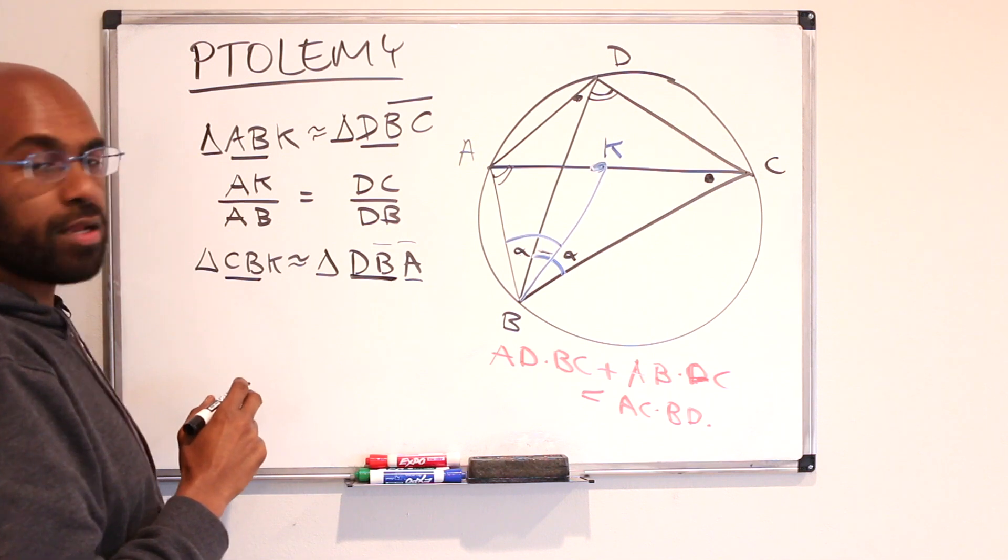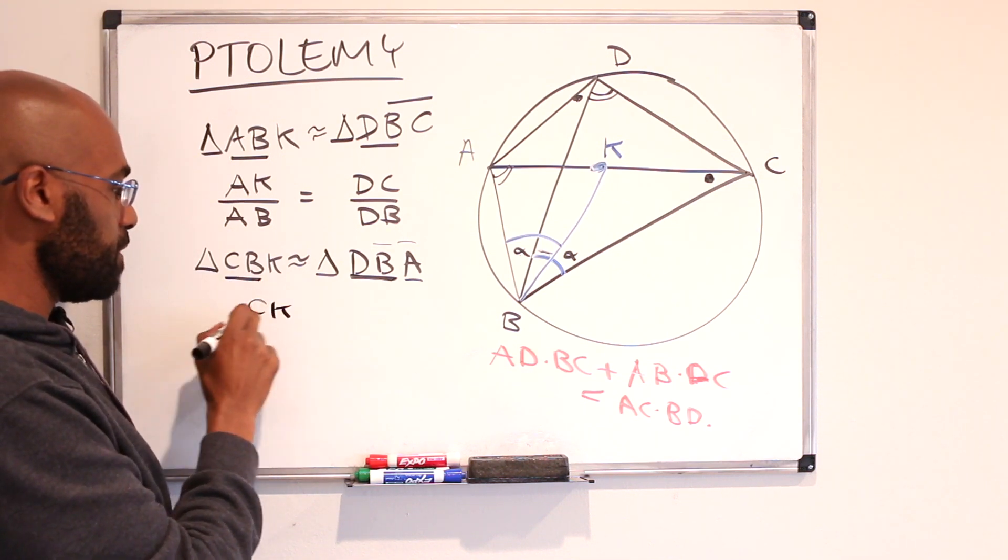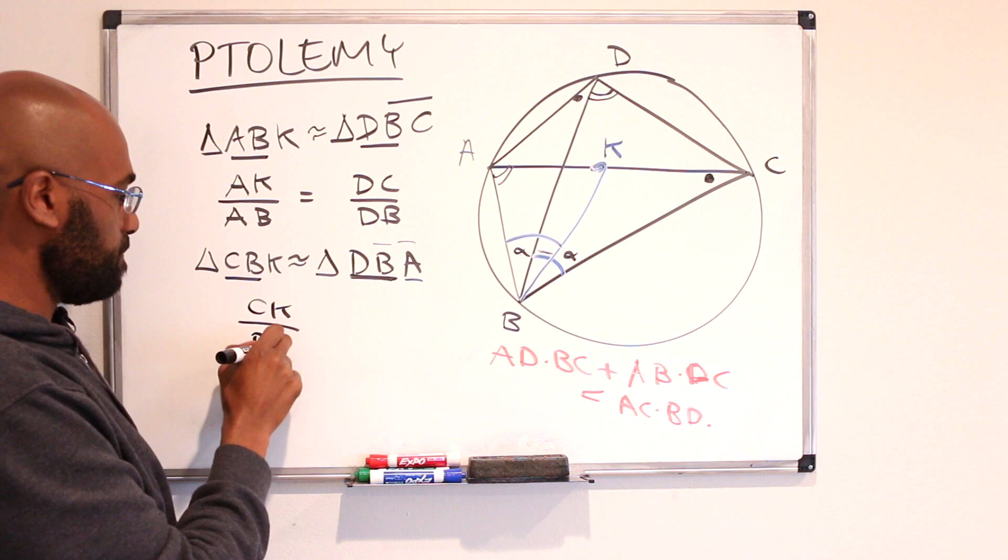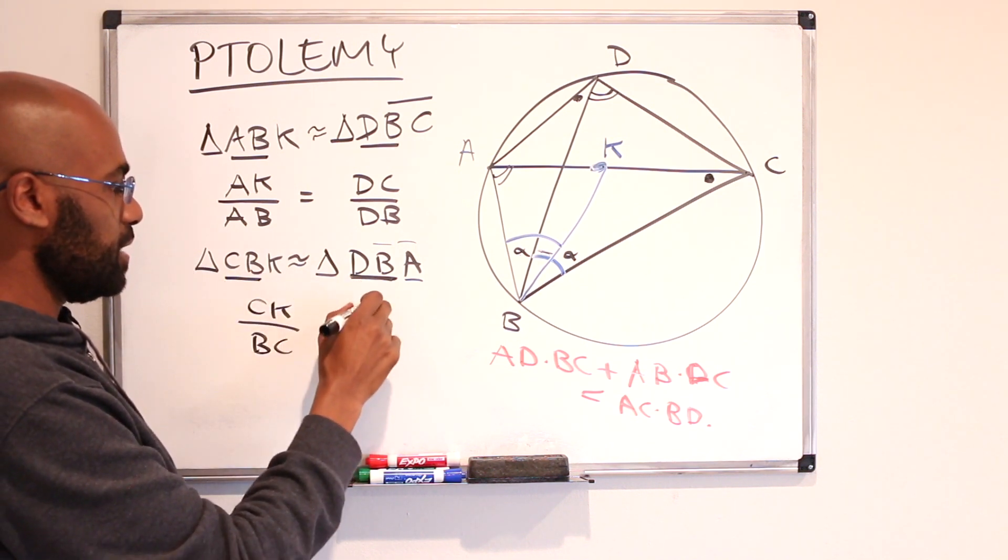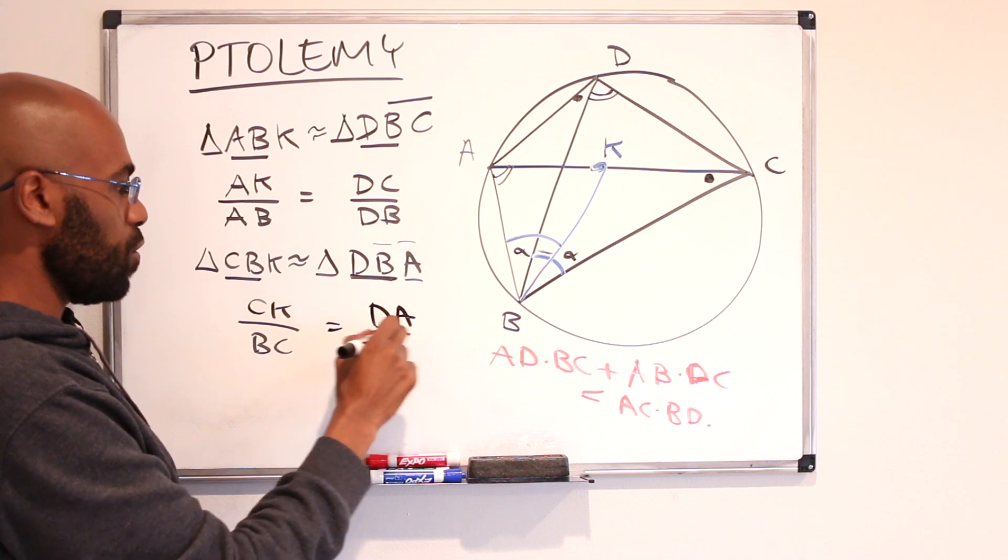So we'll actually use this DB so that we have this CB used and if we do that we get something like CK over BC. So CK over BC is the same as DA over DB.